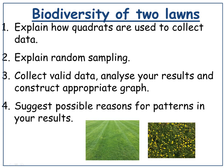You should be able to explain how quadrats are used to collect data, explain what random sampling is, and hopefully you would be able to collect valid data, analyze your results and construct an appropriate graph. You would also be able to suggest possible reasons for the patterns in your results. Usually I would go out and look at a field treated with weed killer, and then look at a more natural field where you should see daisies and buttercups, and compare the species distribution of two different lawns.